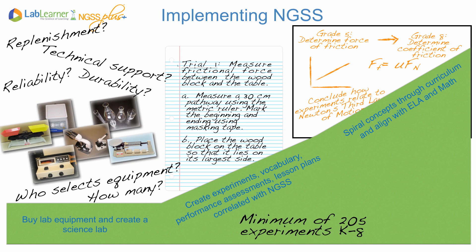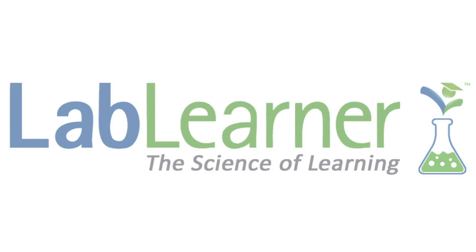Students need to learn concepts multiple times in multiple grades with increasing complexity, so they develop their understanding of science over time. In addition, you'll need to correlate the science curriculum with the Common Core math and ELA standards. Or, you can use what Cognitive Learning Systems spent over a decade designing, developing, testing, and refining: the Lab Learner Science Program.